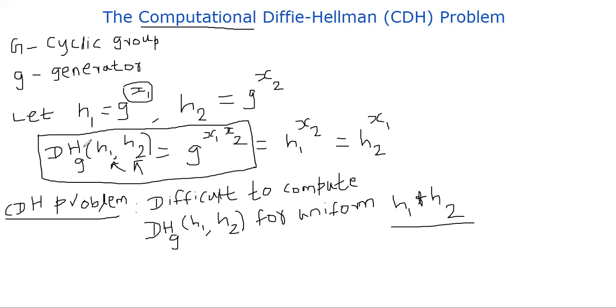But the assumption of the computational Diffie-Hellman problem is that it should be difficult to compute DH of h1, h2 in a reasonable amount of time from a computational time perspective.